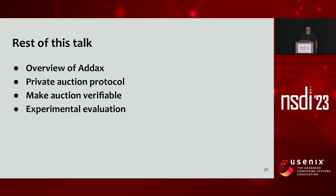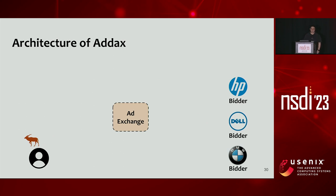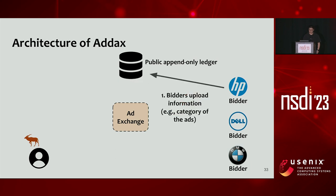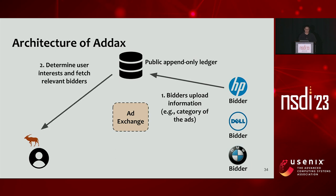In the ADX system we still have ad exchange companies and bidders, plus a browser with ADX-supported functionalities. We also assume a public append-only ledger used mainly for storage, where materials can be written and anyone can read. Initially, all bidders upload information about themselves including advertisement category and target user types. Compatible with local tracking algorithms, the browser can determine user interest from local browsing history, fetch relevant bidder information from the public ledger, and locally select potential bidders for the auction.